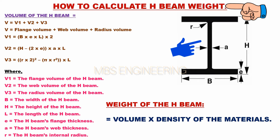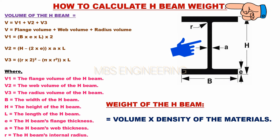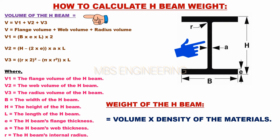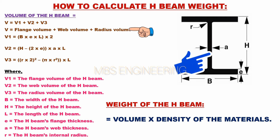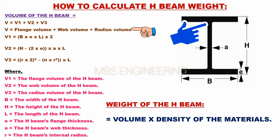Next, we learn how to calculate the volume and weight of the H-beam materials. The volume of the H-beam is: V equals V1 plus V2 plus V3, where V equals the flange volume plus the web volume plus the radius volume of the H-beam.